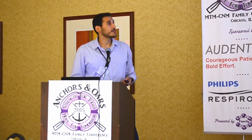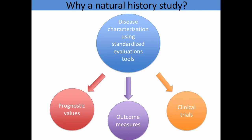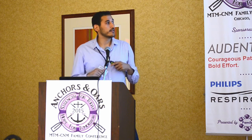First of all, I would like to ask the question: why do a natural history study? Basically, because it will give us the characterization of a disease using standardized evaluation tools. It will give us objective measures of different parameters of the disease. These will give us prognostic values in order to predict the different evolution of an individual in the specific disease. And it will give us outcome measures.